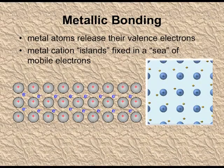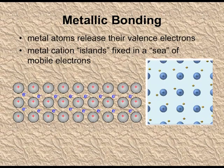Metallic solids have positive ions surrounded by a sea of electrons. These electrons are freely moving, and because of this free movement, metals are good conductors of electricity. Since the metallic bond is very strong, metals have very high melting points.